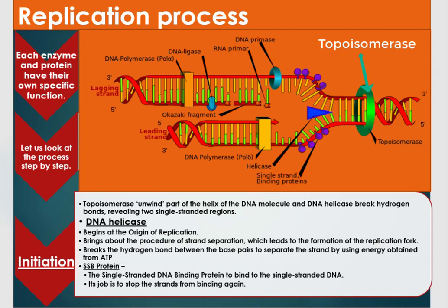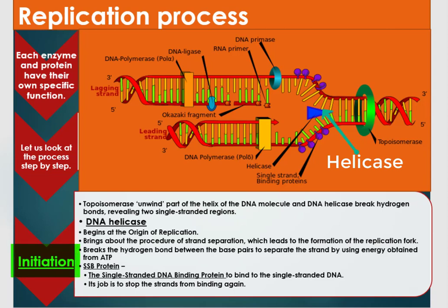At the initiation phase, topoisomerase unwinds part of the helix of the DNA molecule, and DNA helicase breaks hydrogen bonds to reveal two single-strand regions. DNA helicase begins at the origin of the replication fork to bring about the procedure of strand separation, which leads to the formation of the replication fork.